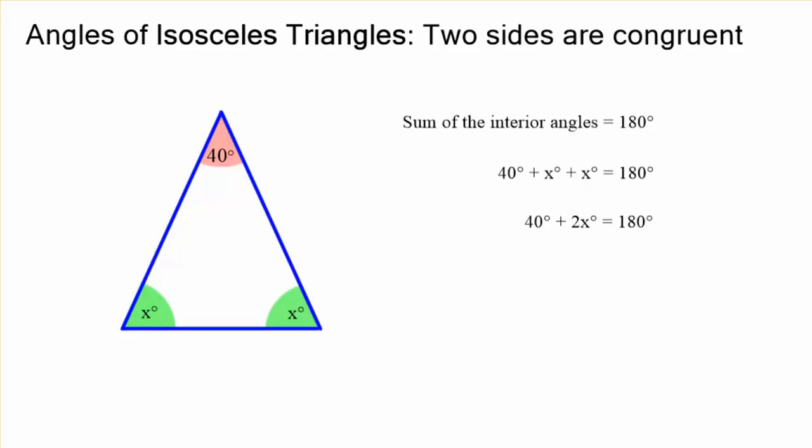You simplify by combining like terms. x plus x is 2x. Then we solve by moving the 40s over there. 2x equals 140. We divide both sides by 2, and we finally get that x is equal to 70 degrees.